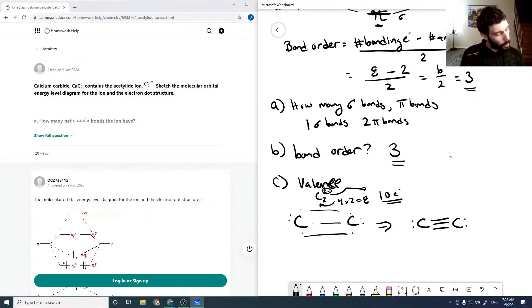So in both cases, we get a triple bond on our carbon, which corresponds to our bond order of three. So valence bond theory and MO theory agree in this case.